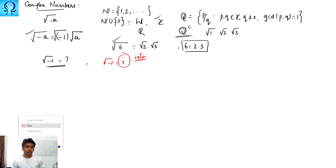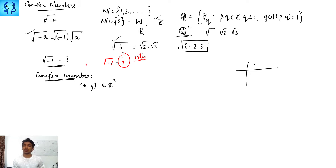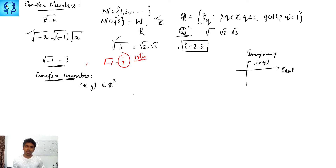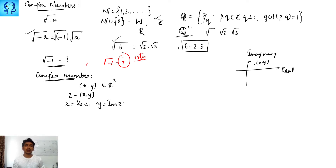Now let us properly define a complex number. From the ideology of real analysis, a complex number is an ordered pair in ℝ², i.e., any value (x, y) in the real plane. If we take one axis as the real axis and another as the imaginary axis, the element (x, y) represents a complex number. In rectangular coordinates, complex numbers are usually denoted with z, where x is the real part and y is the imaginary part. This may also be written as x + iota·y.